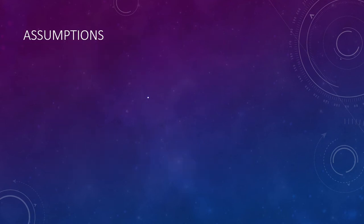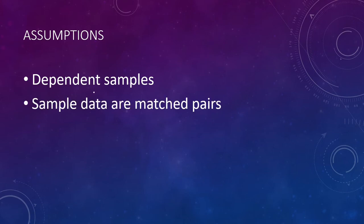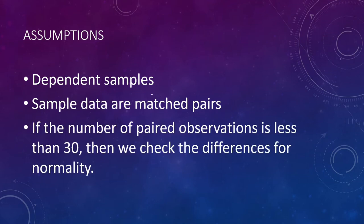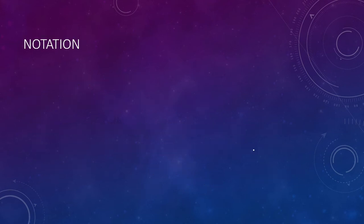We need to look at some assumptions before we start the problem. The samples have to be dependent samples, and sample data must be matched pairs. If the number of paired observations is less than 30, we have to check the differences for normality using our QQ plot and our box plot to make sure there are no outliers.